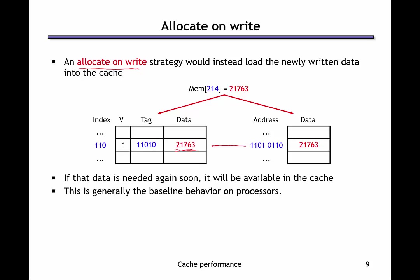With allocate on write, if we're doing write-through we also write to main memory; with write-back we defer that until later. This is a good policy in general because if the data is needed soon, it's in the cache. For example, with the stack: when a program starts and writes to the stack, that cache block is brought in and will be available when we need to load it back. This is typically the baseline behavior in most processors — when you miss on a store, you bring the cache block into the cache. For all the reasons of temporal and spatial locality, this seems like a good policy in general.